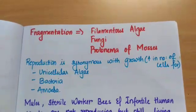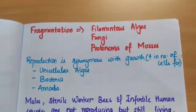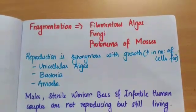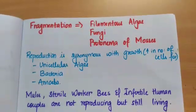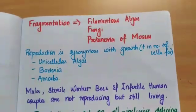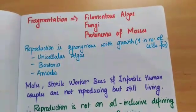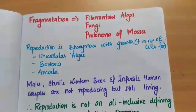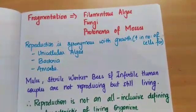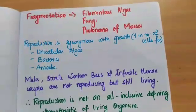Fragmentation is present in filamentous algae, fungi, and in the protonema of mosses. Reproduction is synonymous with growth in the case of unicellular algae, bacteria, and amoeba. In these, it is just an increase in the number of cells.